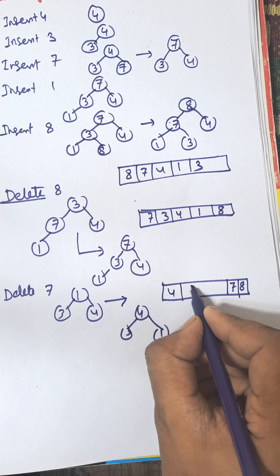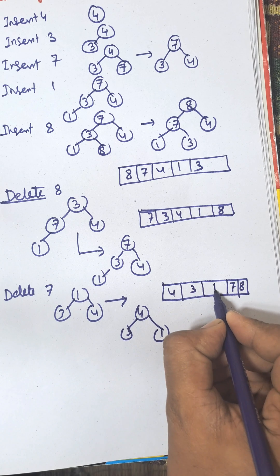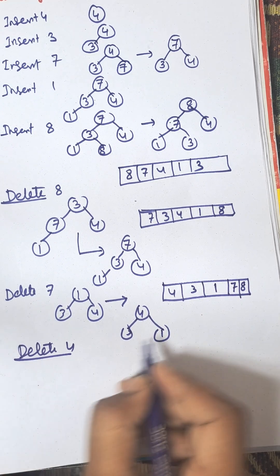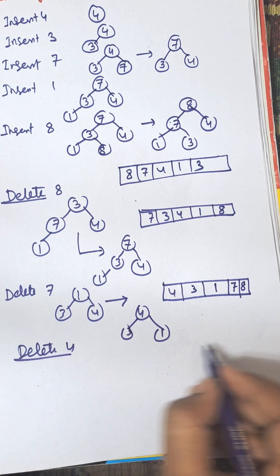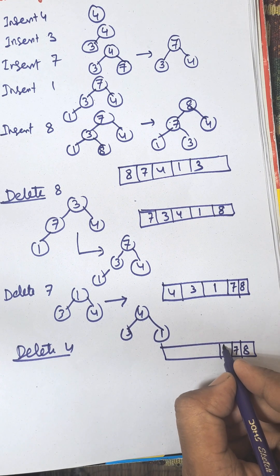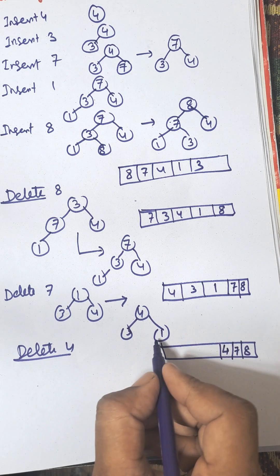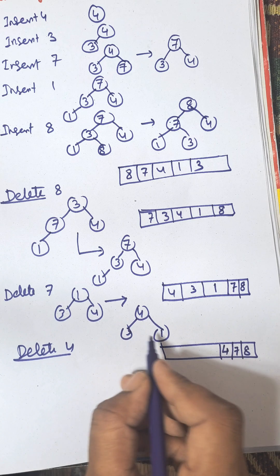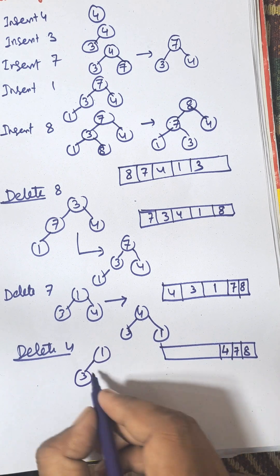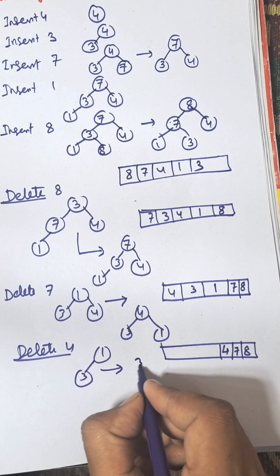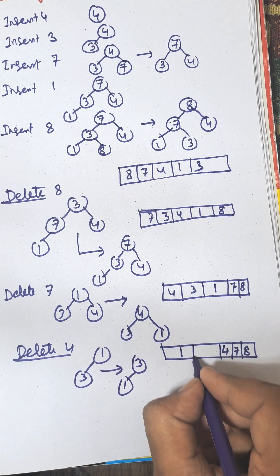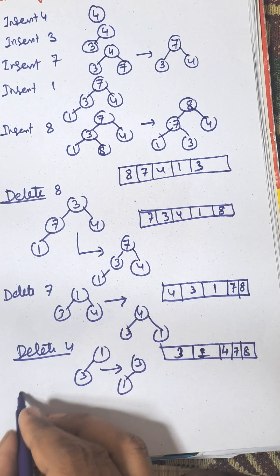We need to construct this as a max heap again — that is 4, 3, and 1. The array is now 4, 3, 1. Again delete 4; it will be inserted in the position before 7. Now 1 will be the root. Construct max heap again — that is 3 and 1.